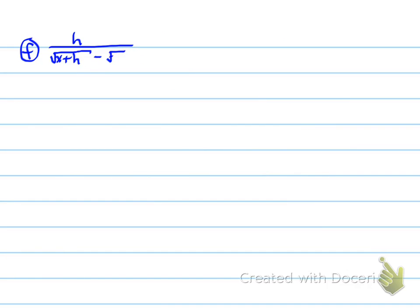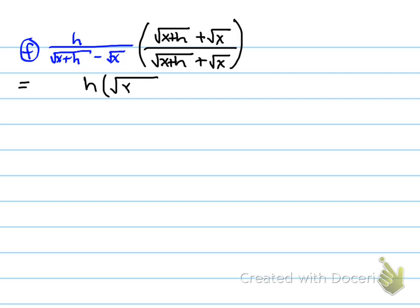Part F. Here's the original question. What are we looking at? We need to multiply by the magic one. In our case, the magic one is going to be root x plus h plus root x. Again, on the top and the bottom, root x plus h plus root x. And when you expand it all out in the top, you have h times that thing that was on the top, root x plus h plus root x. And on the bottom, you're going to have x plus h minus x.